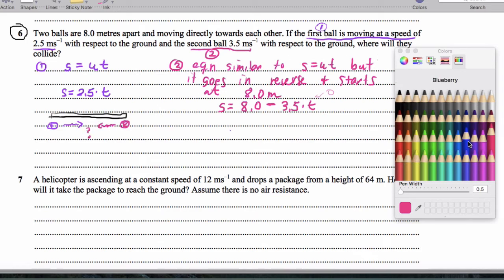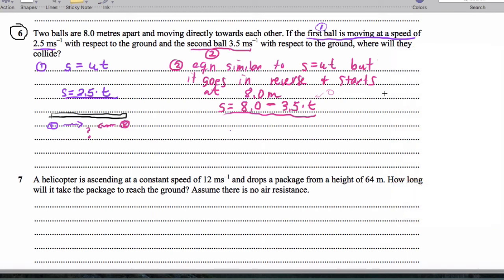And now what we have is a situation where we have two equations and they have two unknowns. And what I'm going to do is I'm going to actually solve this by substitution. And so what that means is I'm going to actually write 2.5 times t is 8.0 minus 3.5 times t.